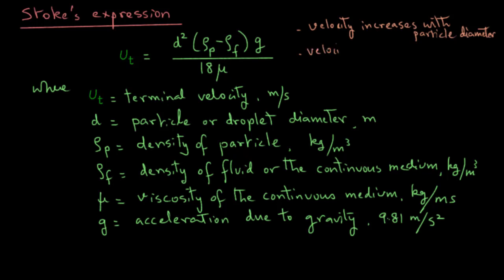The terminal velocity also increases with the difference in densities of the particle and the fluid. So if that difference is small, then the terminal velocity will not be as high as, for example, if the difference is much larger.